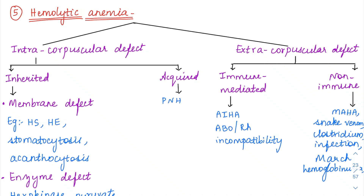Now let us start with the hemolytic anemias. Hemolytic anemias can be divided into two types based on the defect: either it could be a defect in the RBC itself, an intracorpuscular defect, or something else which is going to attack the RBCs and cause their lysis — that is an extracorpuscular defect.